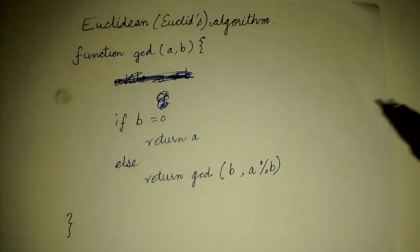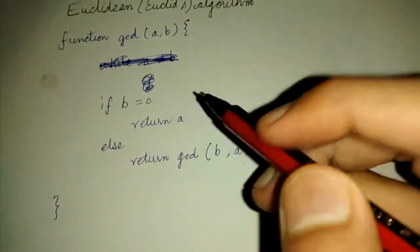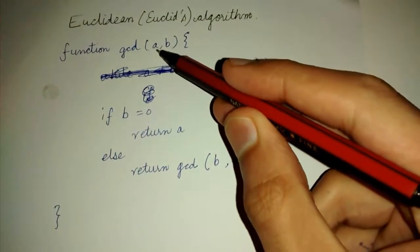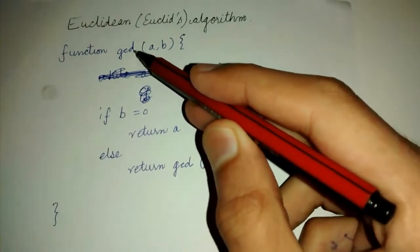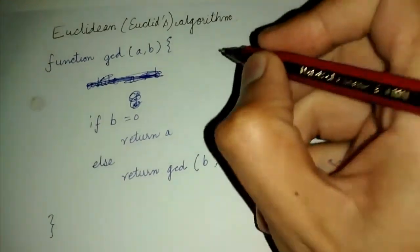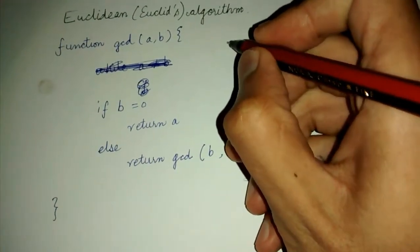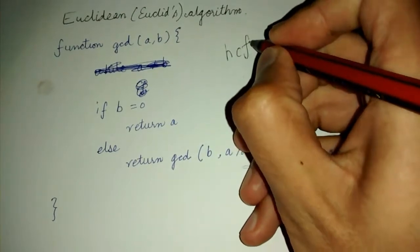We will be looking at the Euclid's algorithm, also called the Euclidean algorithm. We are given two integers A and B and we are asked to find the greatest common divisor, that is the GCD, or we also call it HCF.